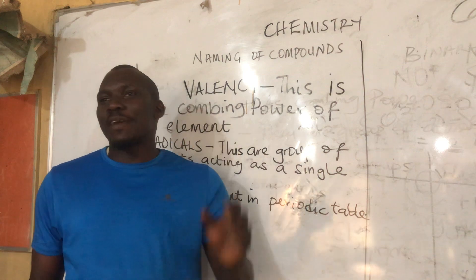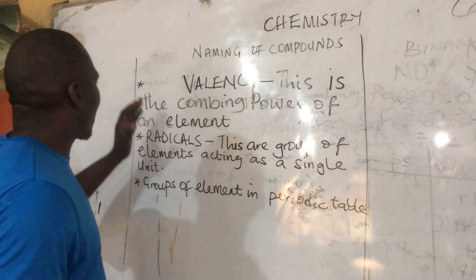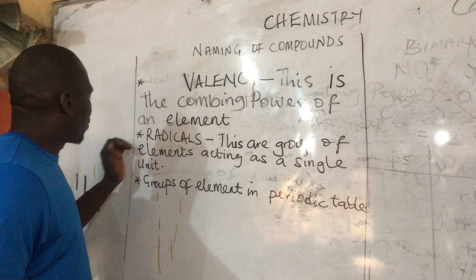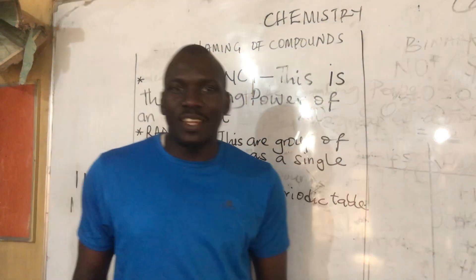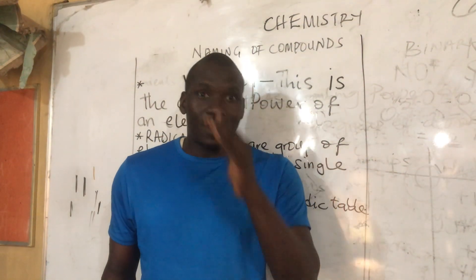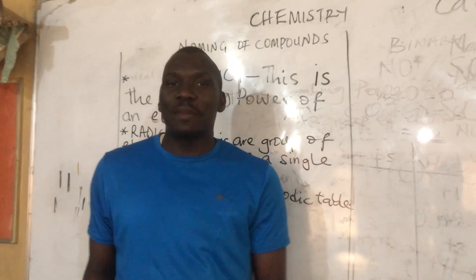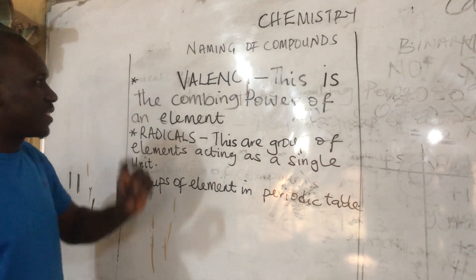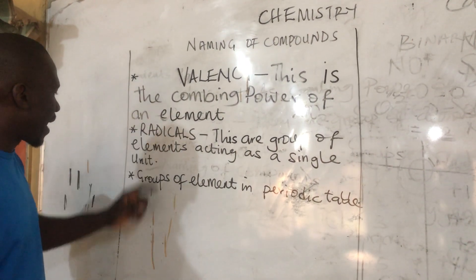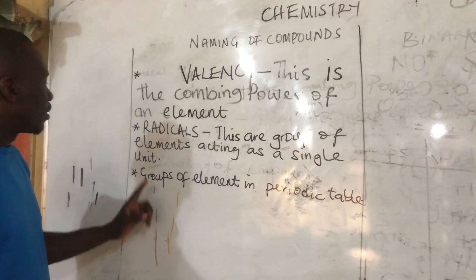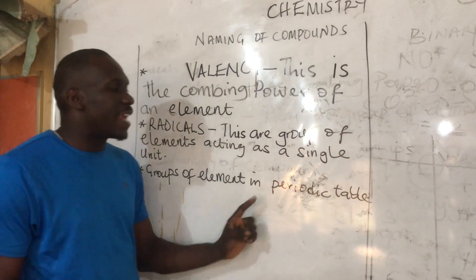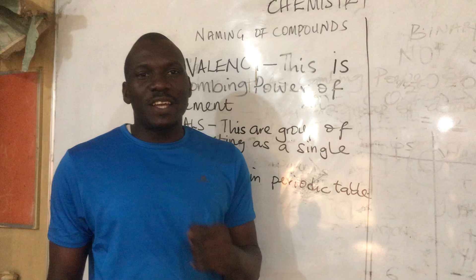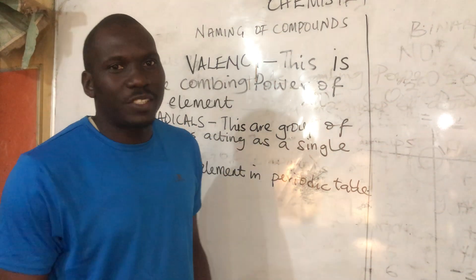In naming chemical compounds, you just need three things. These three values are the key to naming chemical compounds in ten minutes. Number one: valency. Number two: radicals. Number three: you must know the group of the elements in the periodic table.